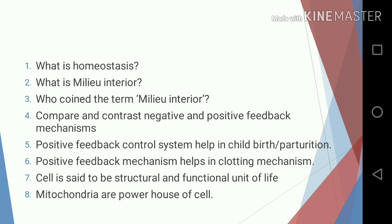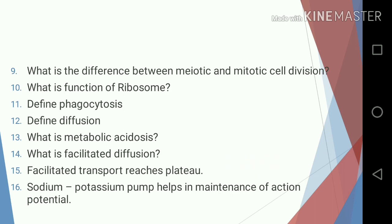Seven, cell is said to be the structural and functional unit of life; eight, mitochondria are the powerhouse of the cell; nine, what is the difference between meiotic and mitotic cell division; ten, what is the function of ribosome; eleven, define phagocytosis; twelve, define diffusion; thirteen, what is metabolic acidosis; fourteen, what is facilitated diffusion; fifteen, facilitated transport reaches a plateau.